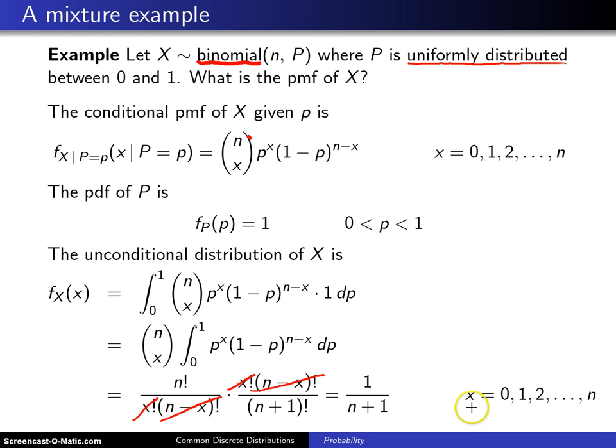and so here are the n plus 1 mass values, and you have actually an equally likely distribution as the probability mass function of X in this particular setting.